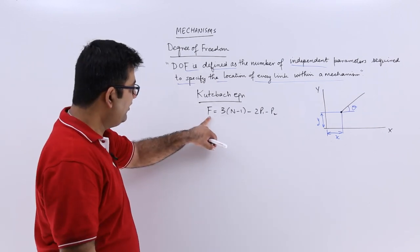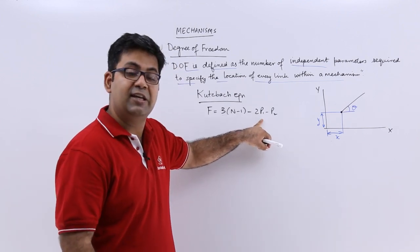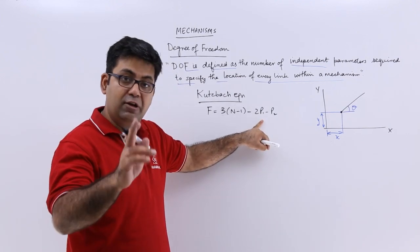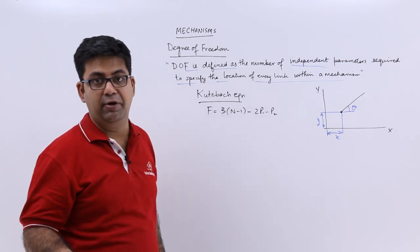F is the degree of freedom, N is the number of links, P1 is the number of lower pairs with one degree of freedom, and P2 is the number of higher pairs with two degrees of freedom.